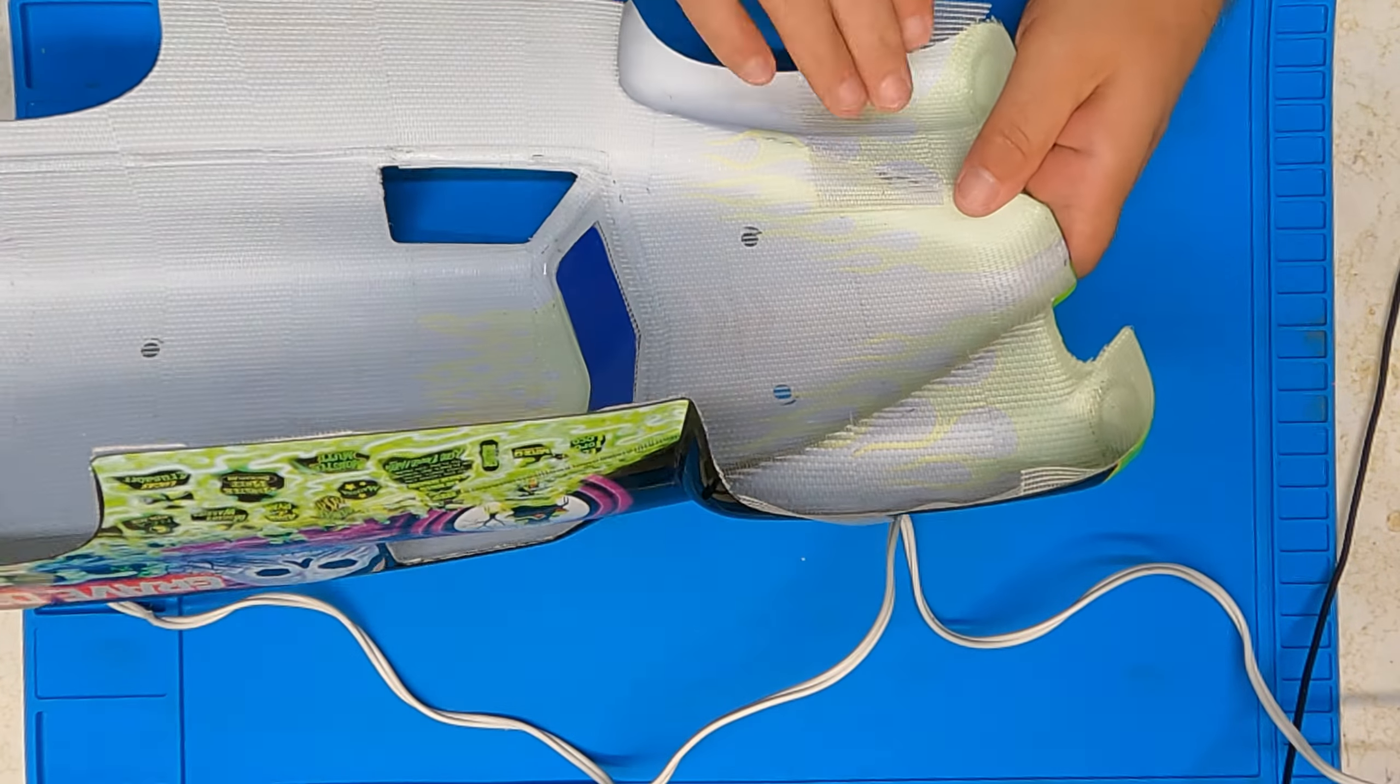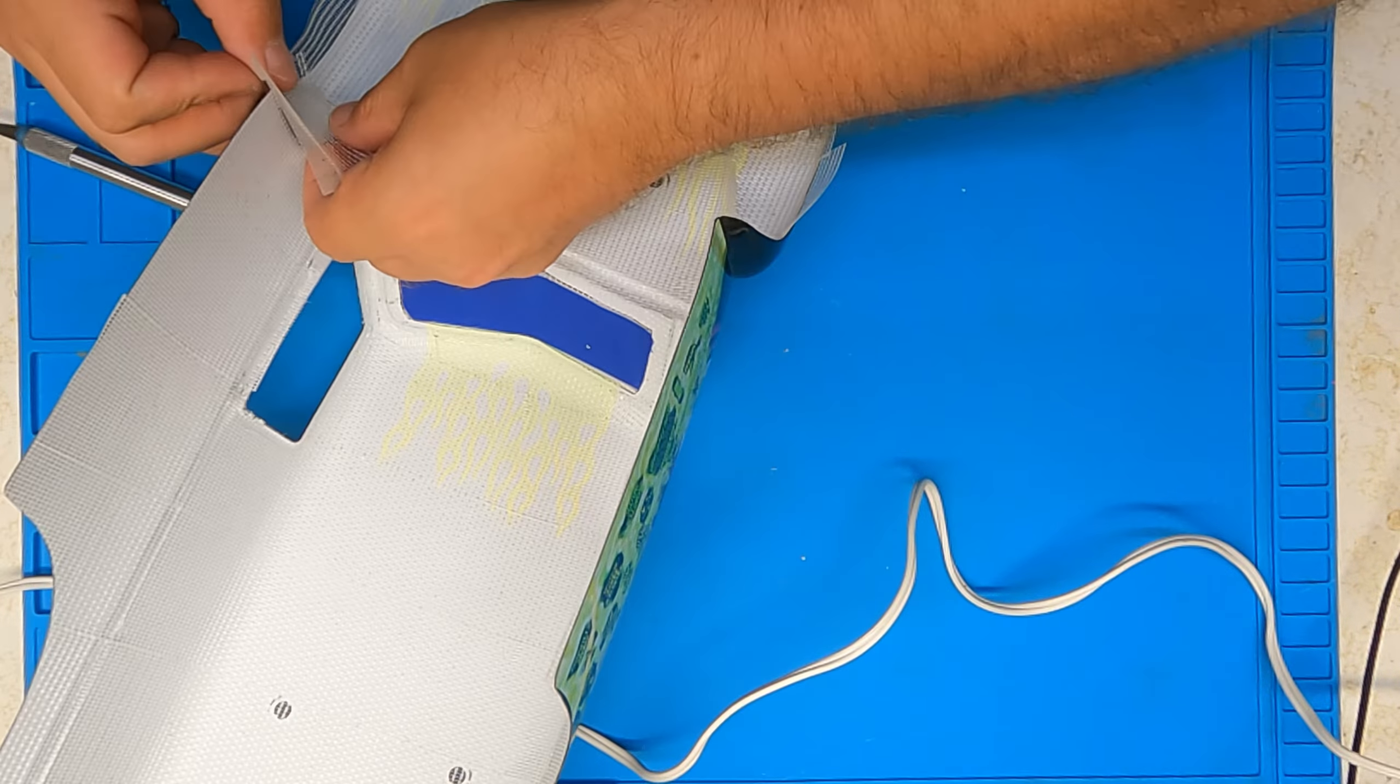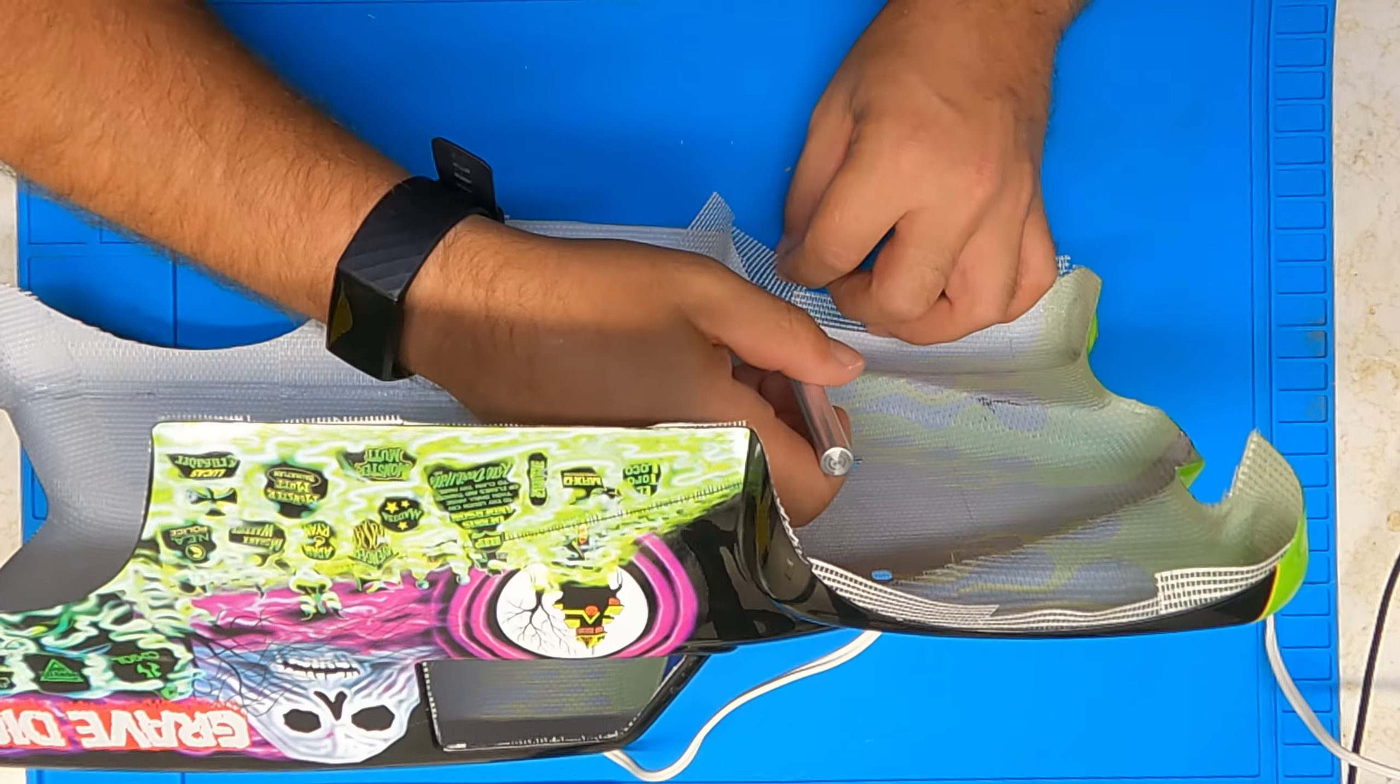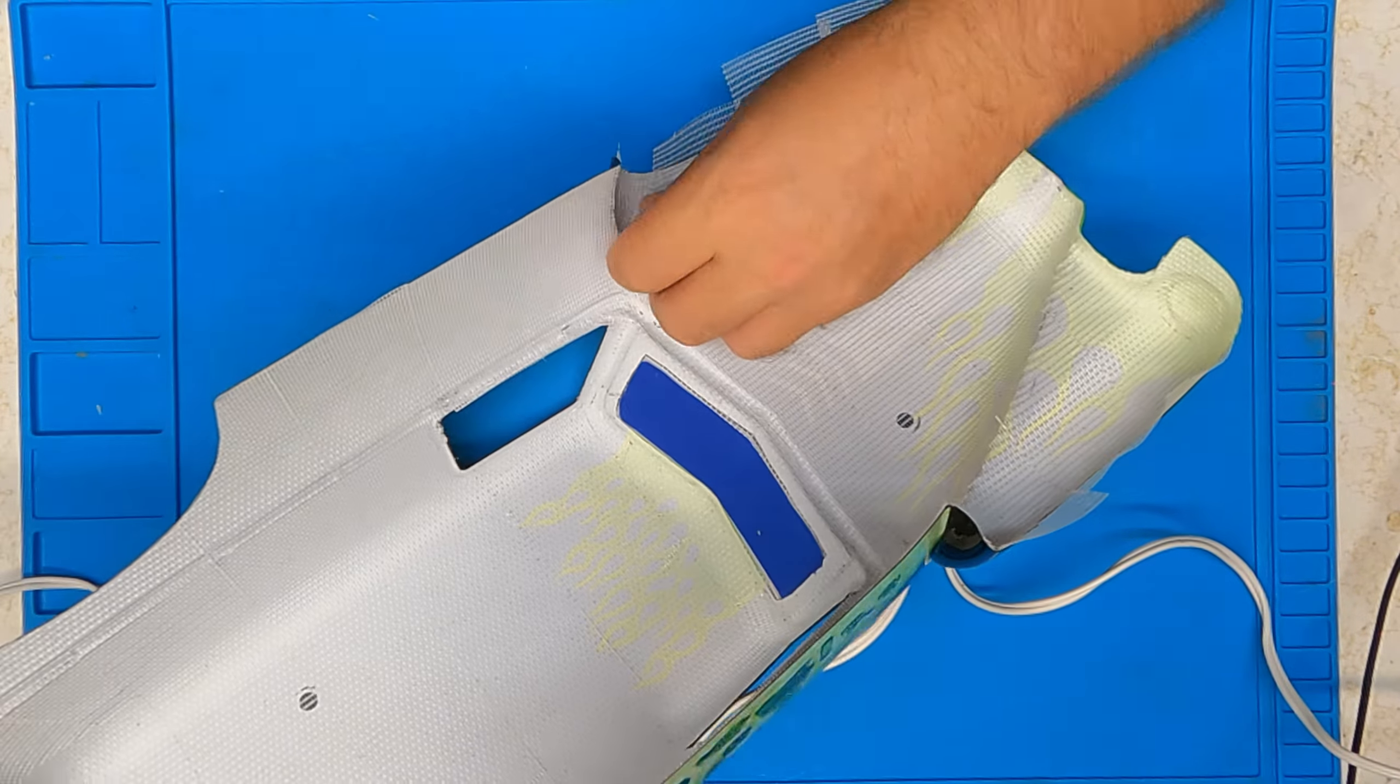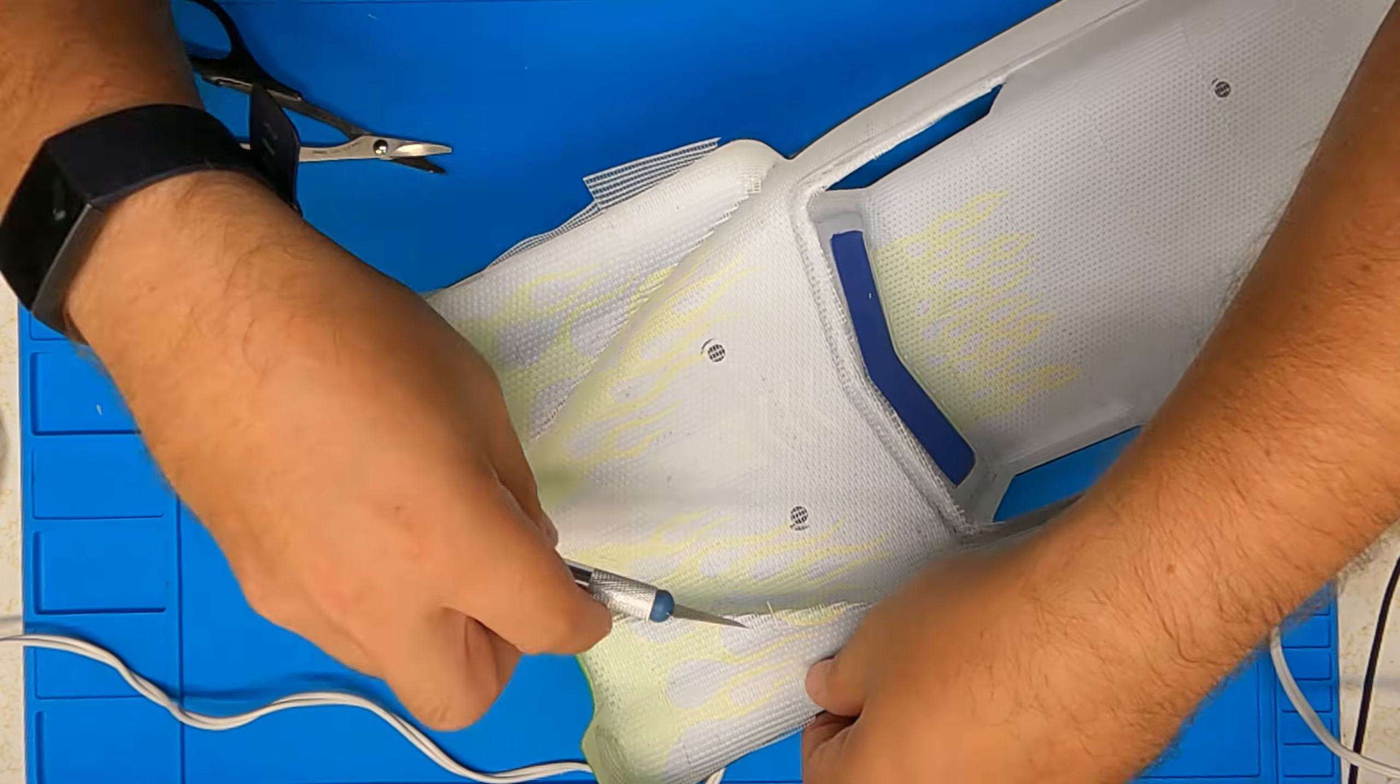When it comes to like the Maxx and the Rustler and the X-Maxx and all that stuff, I'm pretty familiar with the shapes of those bodies, so I'm pretty good at knowing the nice little tips and tricks of getting that done. The Maxx or the Rustler 4x4, the Maxx and the X-Maxx, and I believe the Hoss, all have roughly the same shape body. So if you get down being able to do one of those pretty efficiently, then you pretty much have the whole Traxxas Basher lineup.